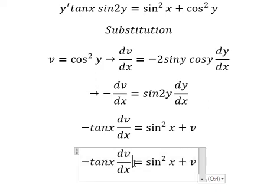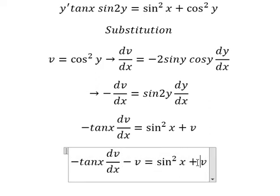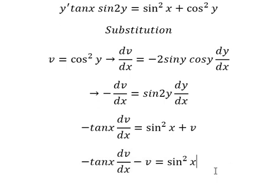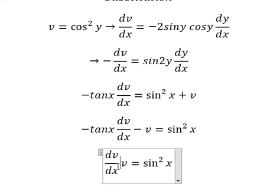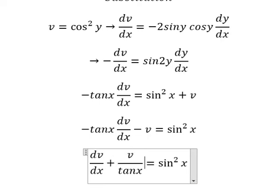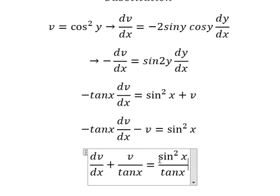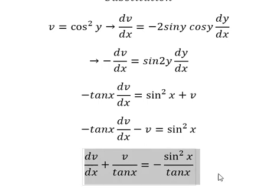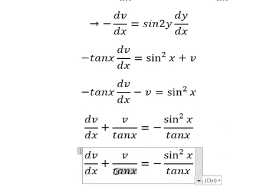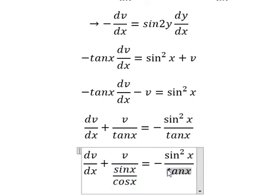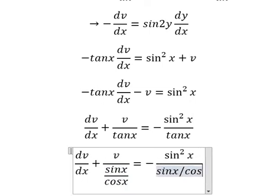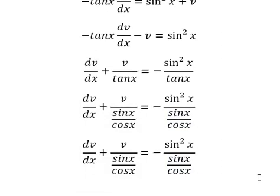So I will put v on the left side. Later we divide both sides by negative tan(x). Recall that tan(x) equals sin(x) over cos(x), so we expand tan(x) as sin(x) over cos(x) similarly for the other term.